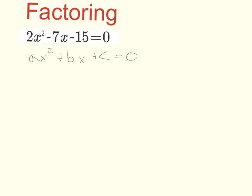So the first step in factoring a quadratic equation is to multiply a times c. And in our case a is 2, and c is negative 15. So 2 times negative 15 is negative 30. Alright, so we have a times c, in this case negative 30.